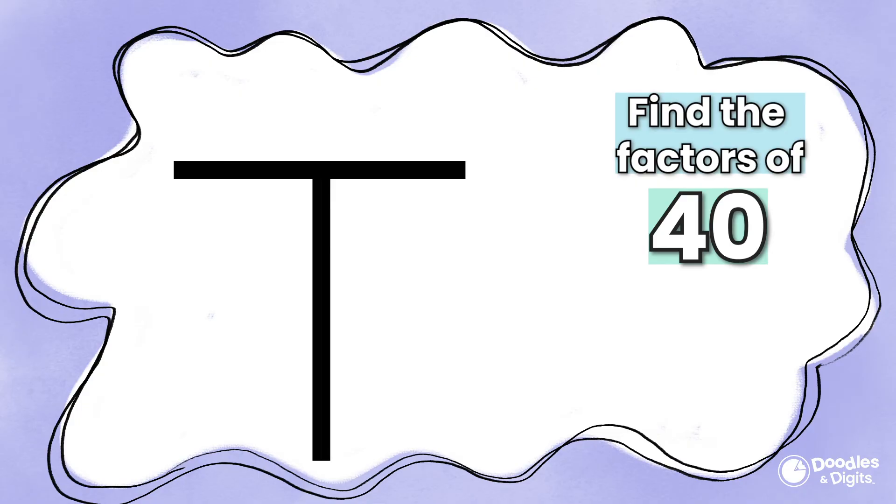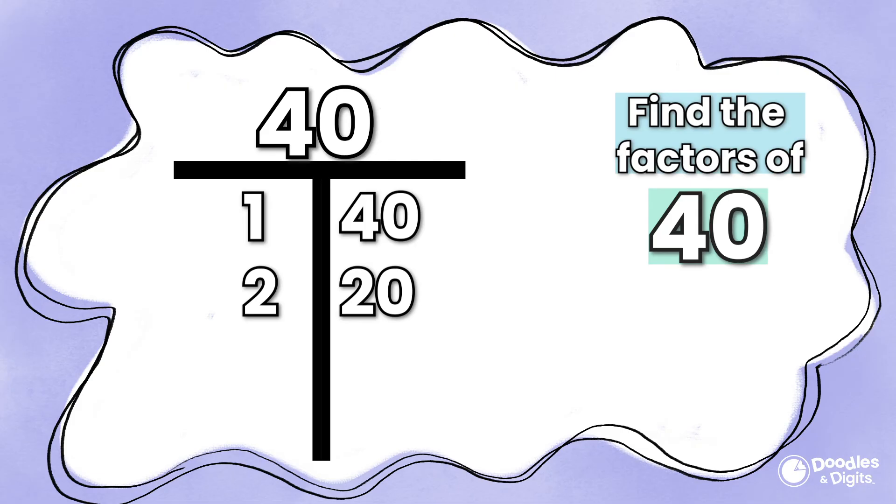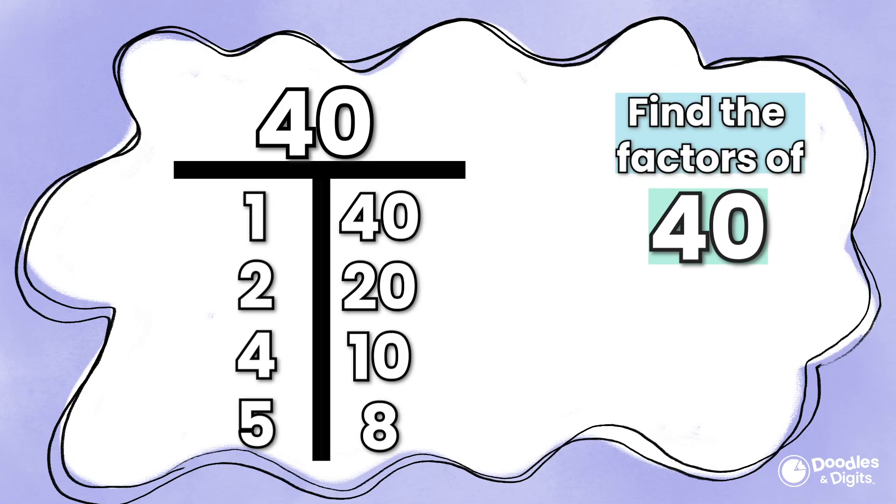I'm going to use the t-chart strategy to show my thinking. Alright, 40. What are the factors of 40? We're going to start with 1. 1 times 40 equals 40. Alright, let's go on to 2. 2 times what equals 40? 20. Is 3 a factor? 3 is not a factor of 40. What about 4? 4 times 10 equals 40. 5? 5 times 8 equals 40.